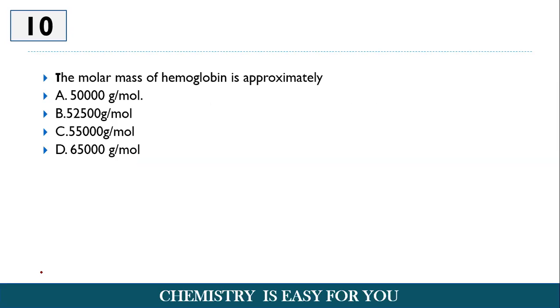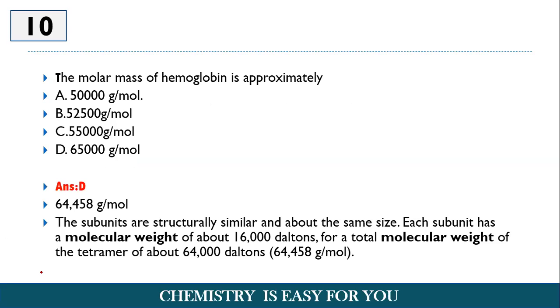Further, the molar mass of hemoglobin is approximately, this question has been previously asked in many examinations: 50,000, 52,500, 55,000 and 65,000 gram per mole. The answer is option B, it is almost 64,458 gram per mole. So we know that it has four subunits, hemoglobin. Subunits are structurally very similar and has the same size and each of these subunits has a weight of 16,000 daltons and the tetramer, that is these four units together comprises of a weight of 64,000 daltons or 64,458 gram per mole. That is the answer here.